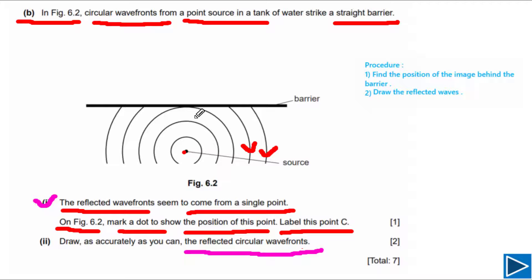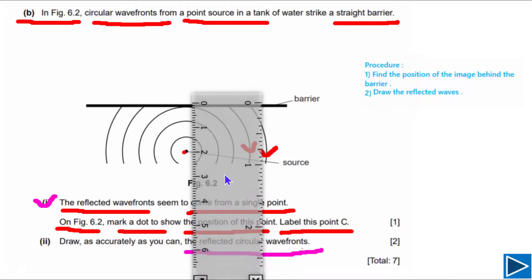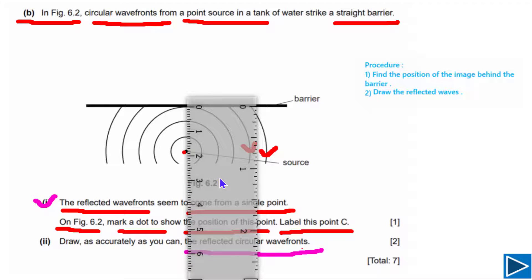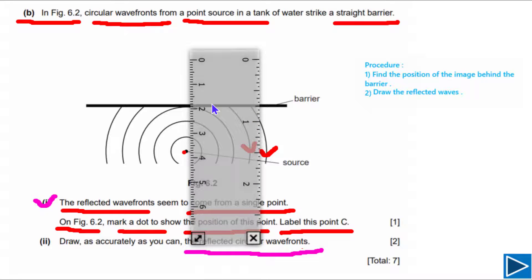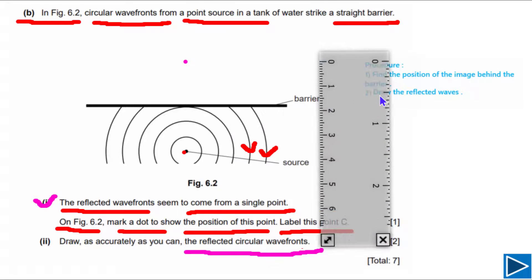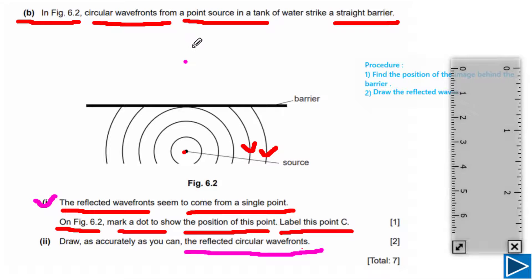For part 1, we need to locate the position of the image, which has to be at the same distance from the barrier as the point source. Using a scale, the distance from the barrier to the point source is about 1.8. We move the scale up and the image location also has to be 1.8 from the barrier. We mark that point and label it with capital C — this is the location of the image, the single point from where the reflected wave fronts appear to come.